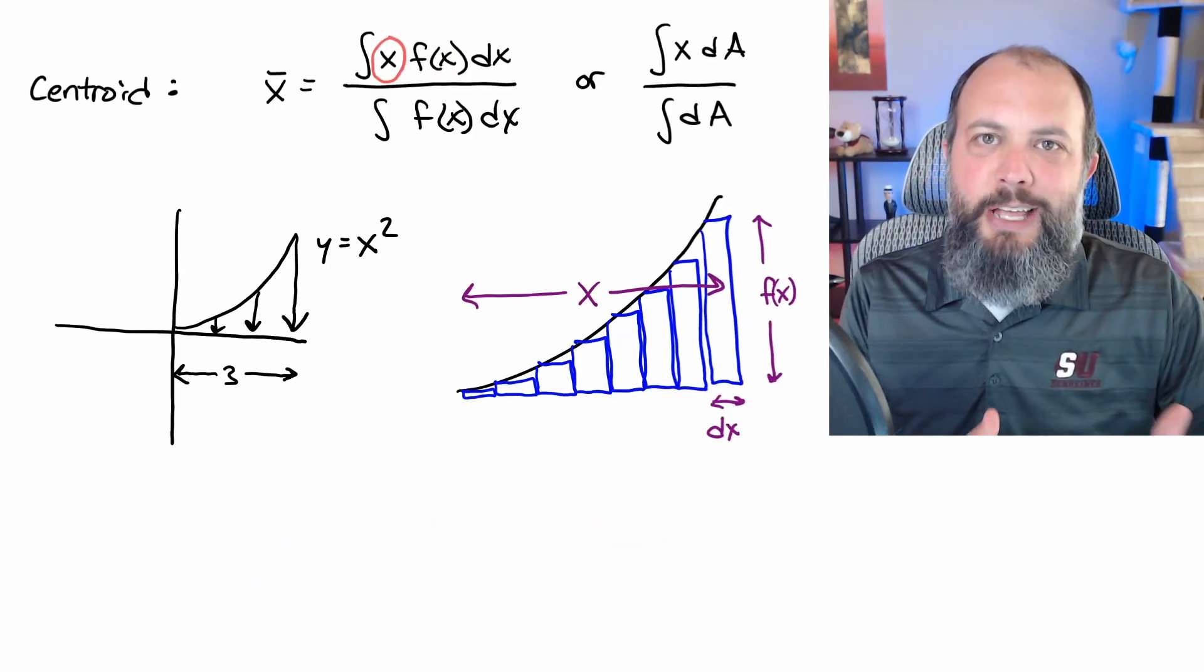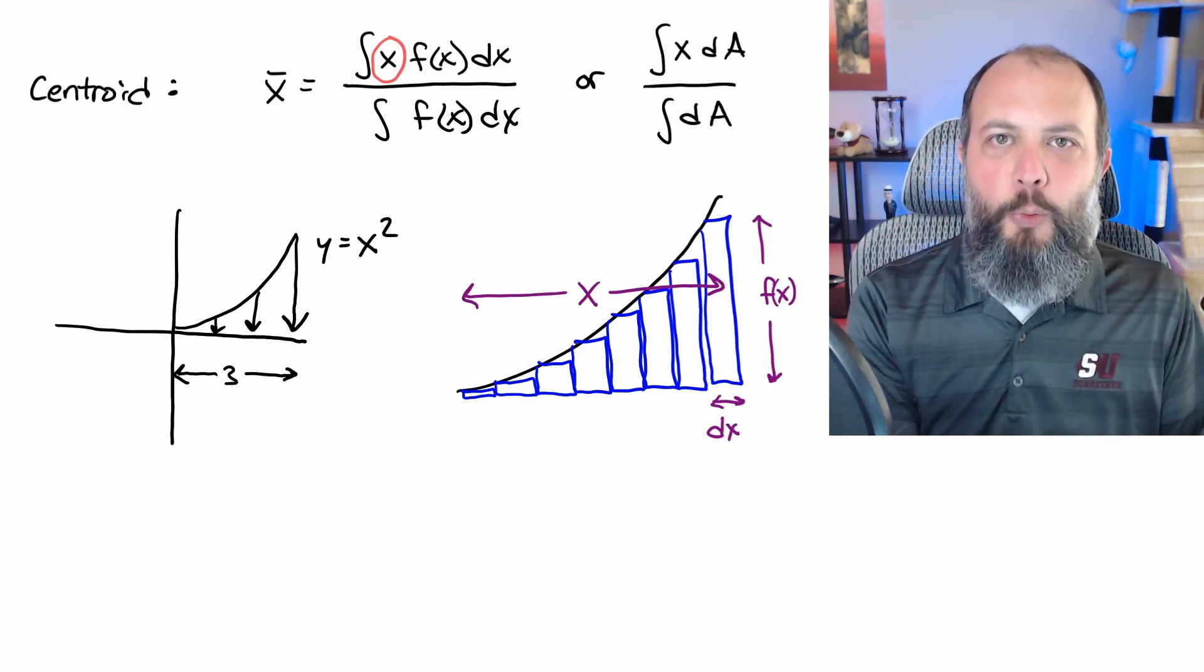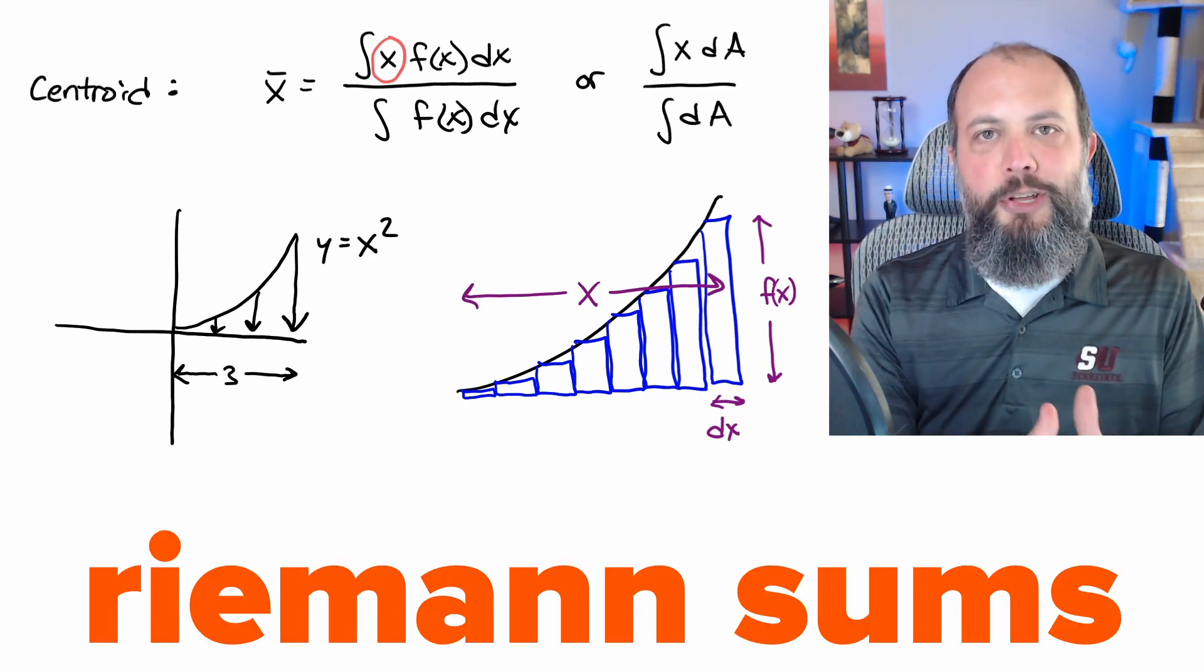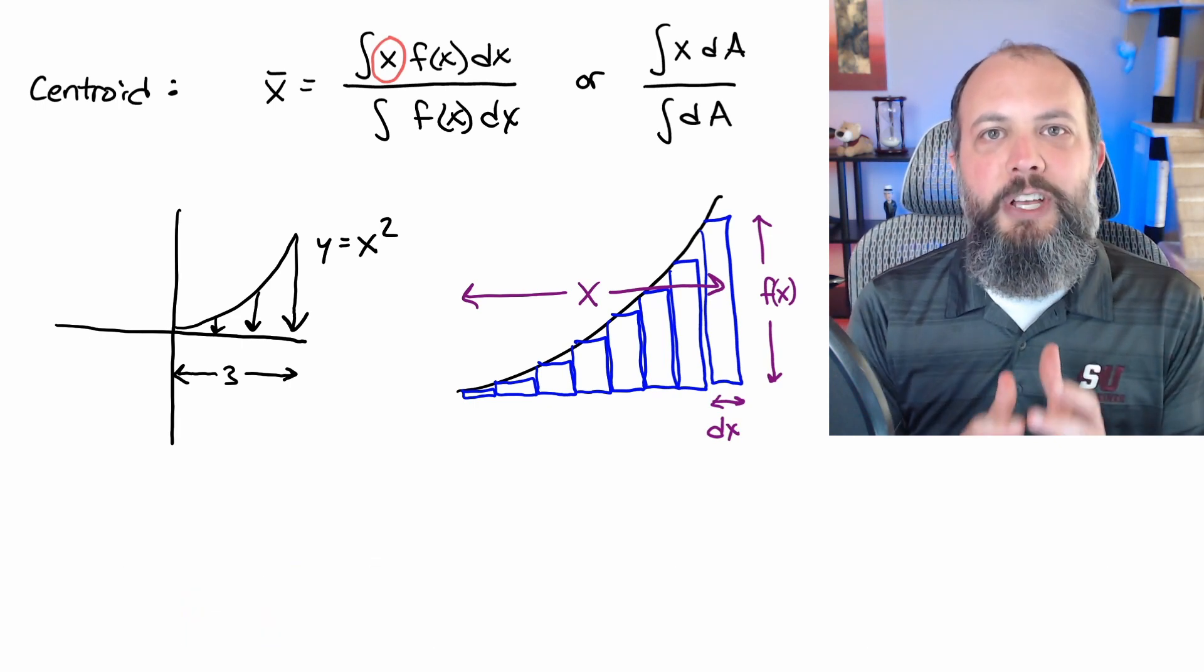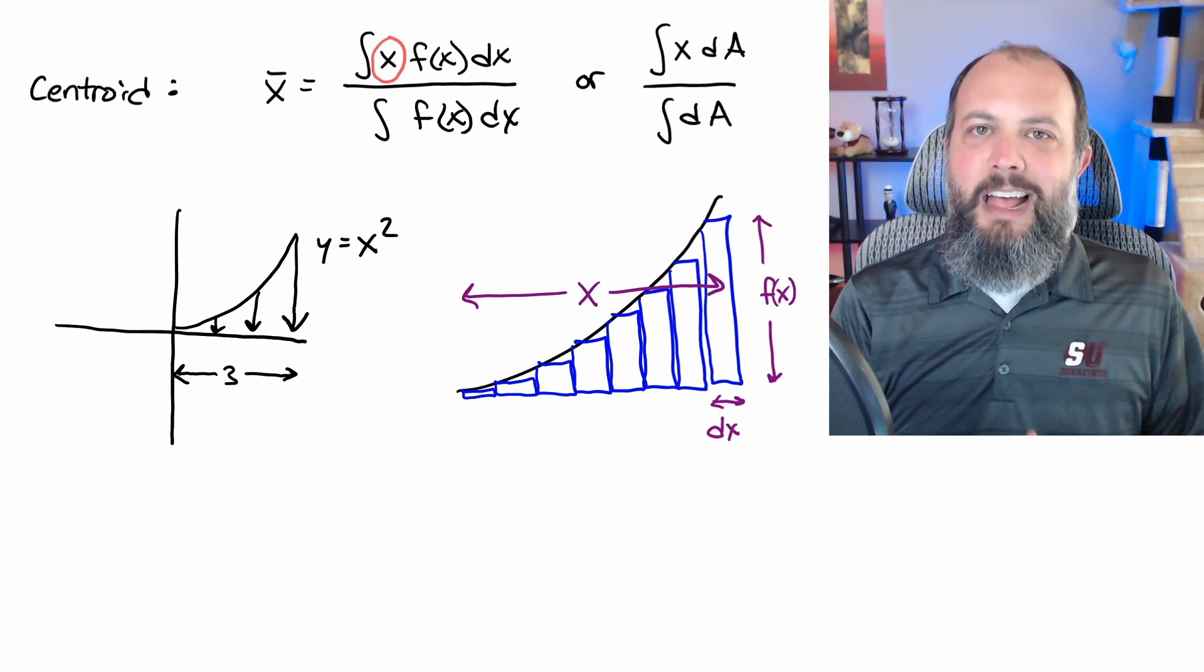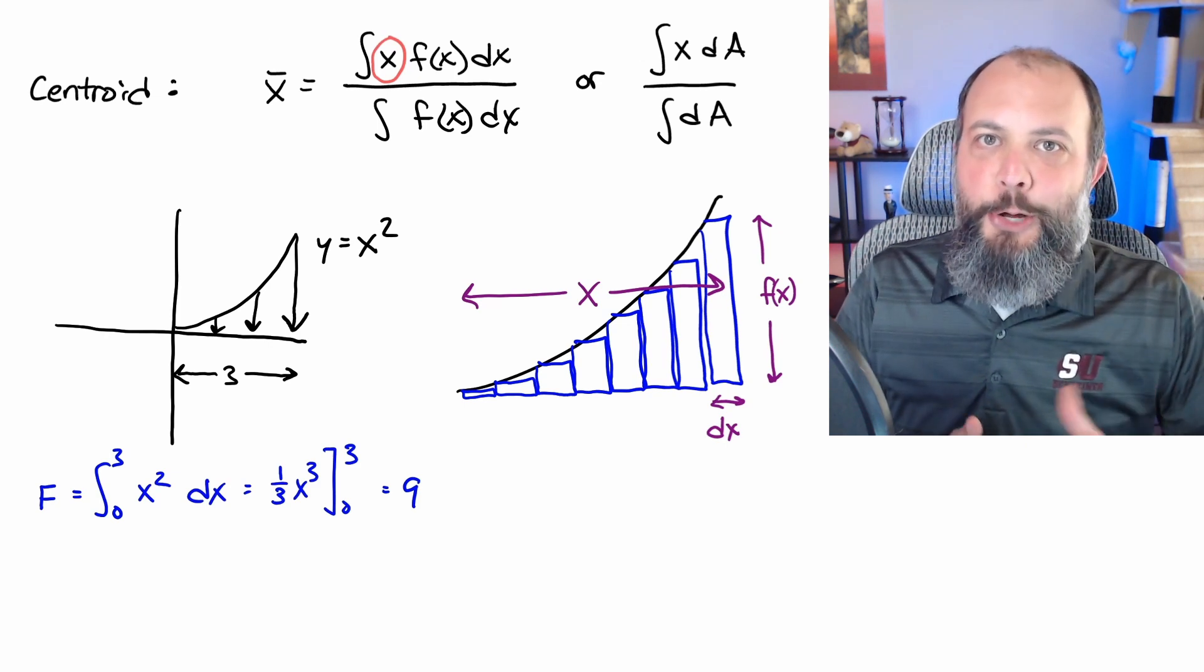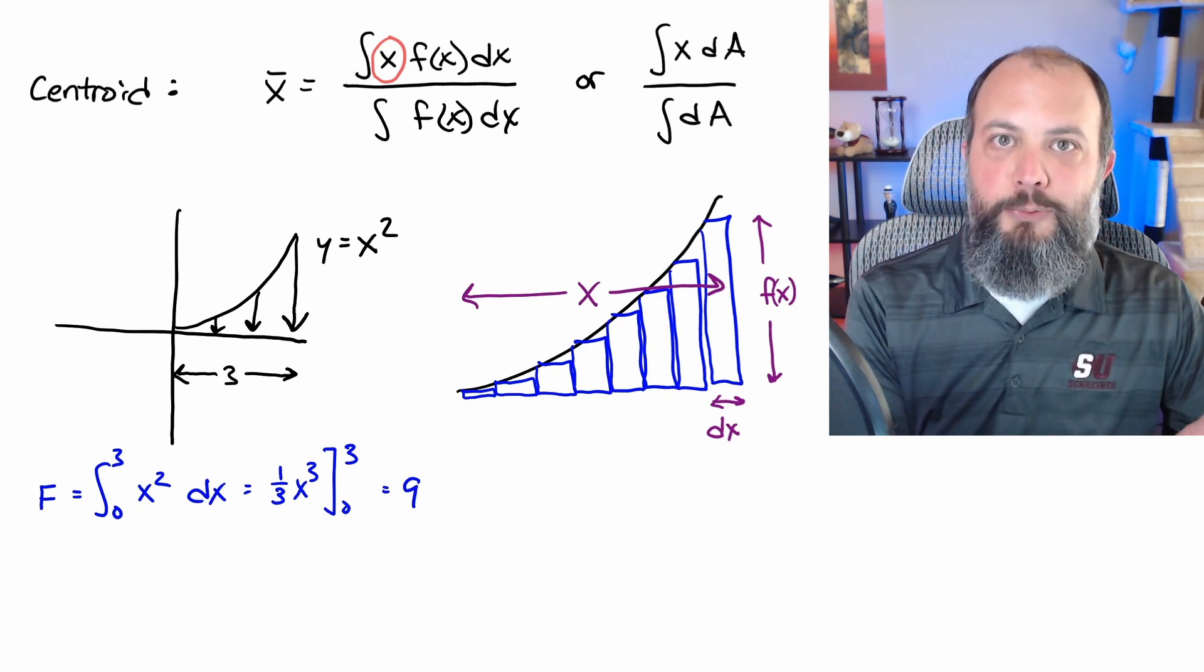Now to relate that GPA to a distributed load, consider if you had a force with a function Y equals X squared. And now picture that function as being broken up into Riemann sums. Think back to calculus, this is where you draw rectangles underneath your curve. Each of these rectangles represents one of the classes that you're taking. The area of each of these rectangles, F of X times DX, represents the number of credits of this course. And then the distance X is like the grade you receive.